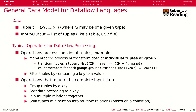Let's talk about a data model for data flow programming languages. You can think of the data like a table or a CSV file, which consists of a list of tuples. A tuple is basically defined as a set of individual values: x1 up to xn, where n is the number of different columns in the table. Each column may have a specific type — for example, the first element could be of type string, and the last one could be an integer or date.